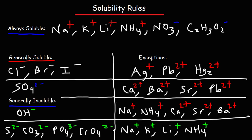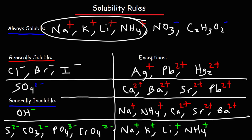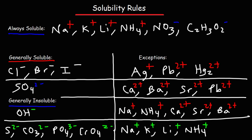Focusing on the last group: sulfide, carbonate, phosphate, and chromate. These ions are generally insoluble, but they will be soluble with Group 1 metal cations like sodium, potassium, and lithium, and of course with ammonium. Those are the general solubility rules you need to be familiar with — knowing this is enough to determine if a compound is soluble or insoluble.